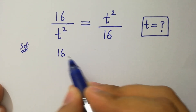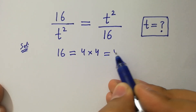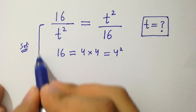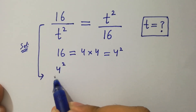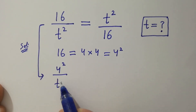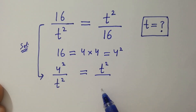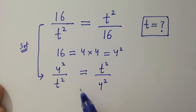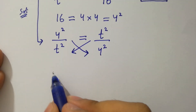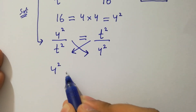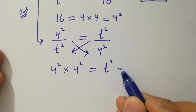Since 16 equals 4 times 4, which is 4 square, it will be 4 square over t square equals t square over 4 square. By cross multiplication, we have 4 square times 4 square equal to t square times t square.